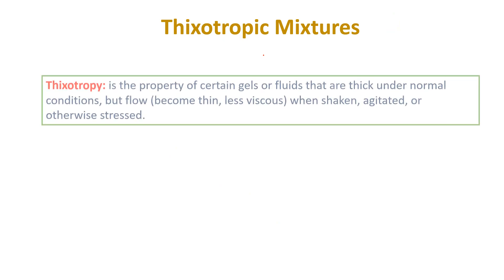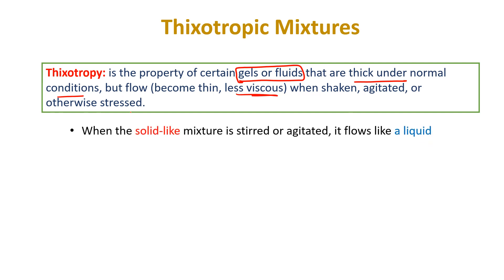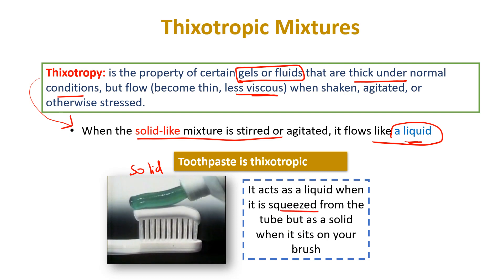What's a thixotropic mixture? Thixotropy is a property of certain gels or fluids. An example is toothpaste: toothpaste is solid, but when we press or squeeze it, it flows like a liquid — it becomes less viscous. That's the definition of thixotropy.